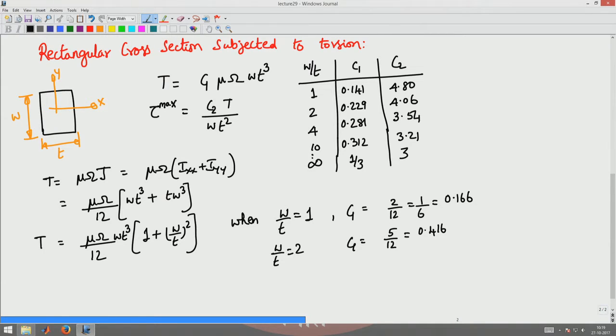This is what will happen because of warping. Similarly what we had from the previous expression, tau max would have been t by j into r.